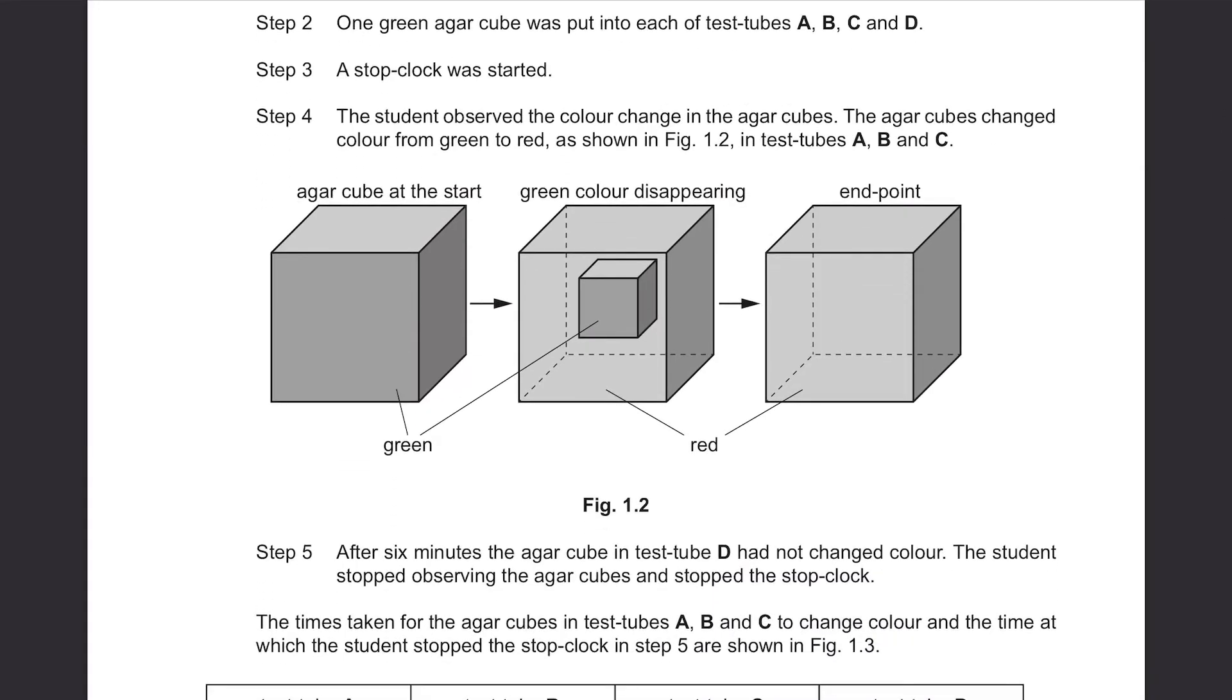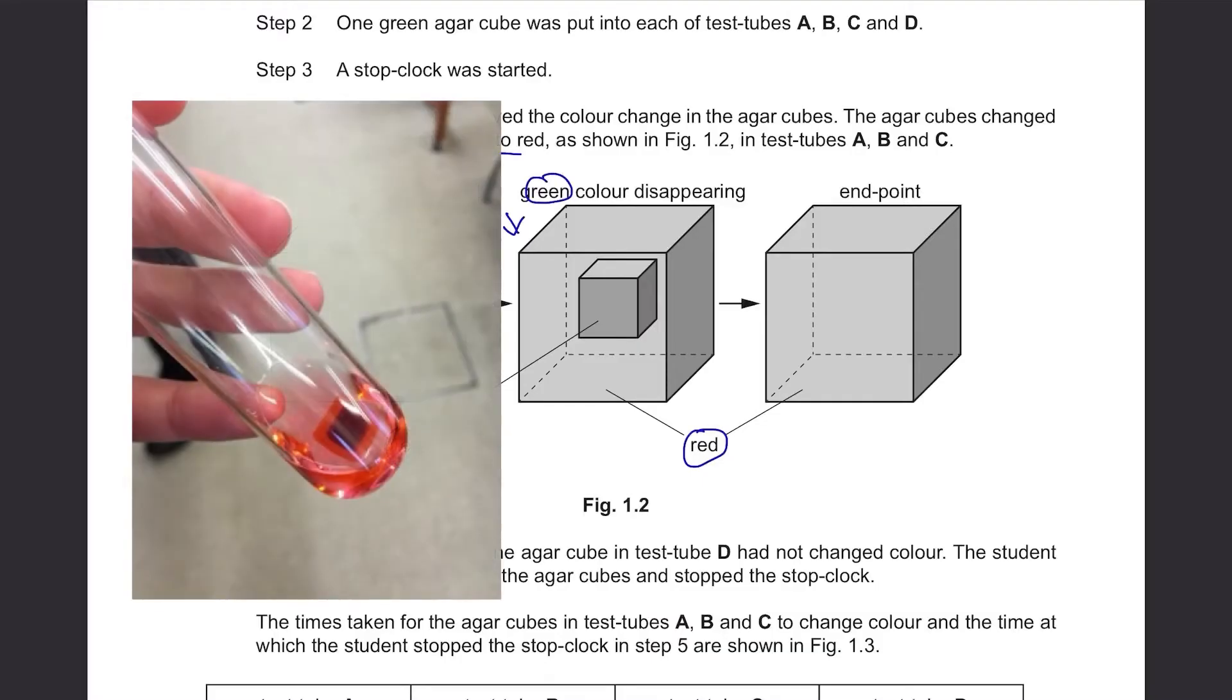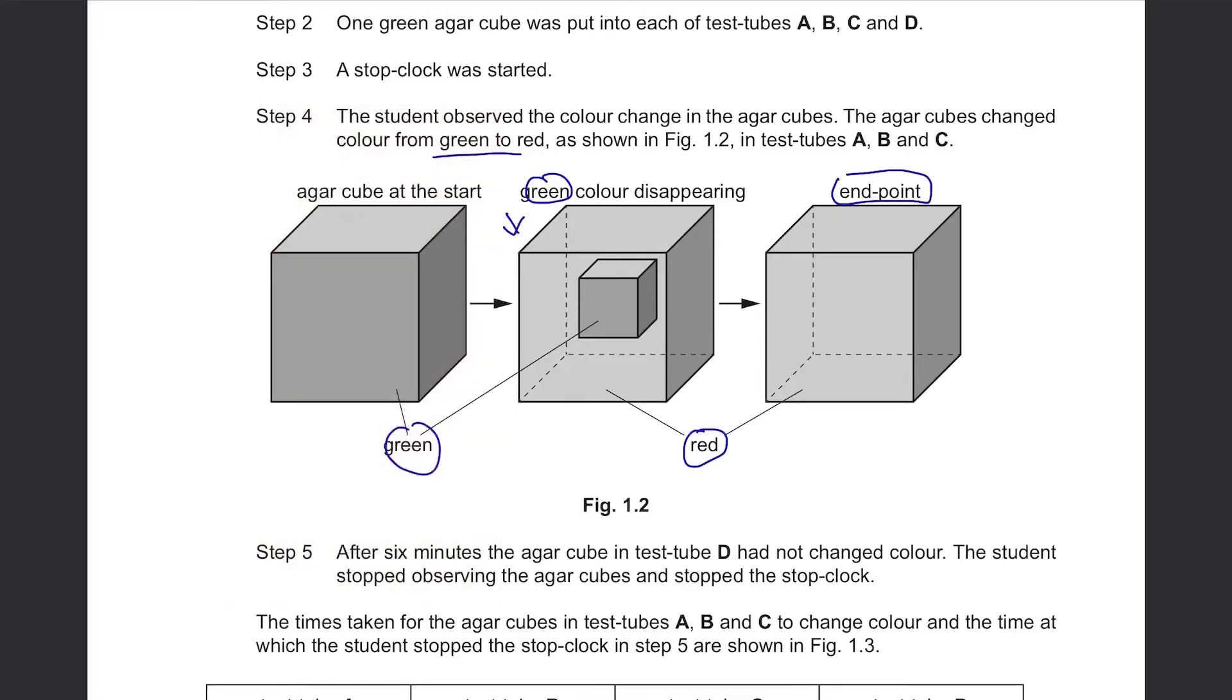Step 2. One green agar cube was put into each of test tubes A, B, C, and D. Step 3. A stop clock was started. Step 4. The student observed the color change in the agar cubes. The agar cubes changed color from green to red as shown in figure 1.2 in test tubes A, B, and C. So at first, everything was green, but as the green color started disappearing, this diagram here does not mean that there are two cubes. It means that the outer surface is red, but the inner part is green, so you can imagine the green color fading away on its surface and becoming red, but the center part is still in green. And the end point is when the whole thing became red. Step 5. After 6 minutes, the agar cube in test tube D had not changed color. The student stopped observing the agar cubes and stopped the stop clock.